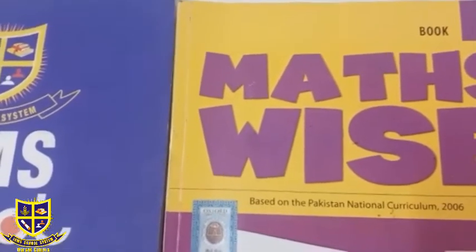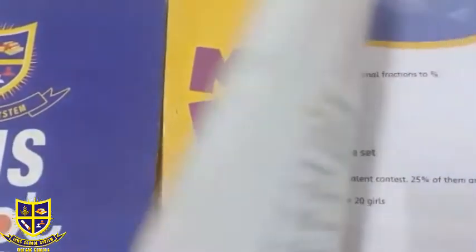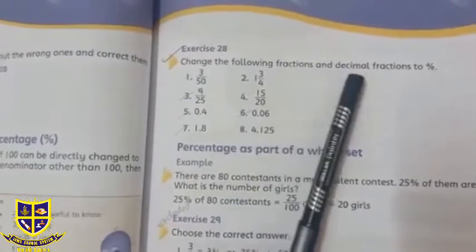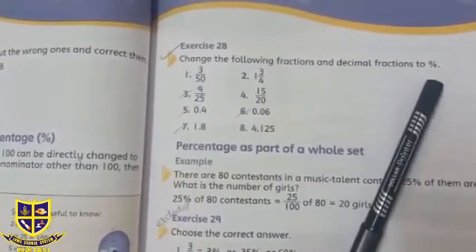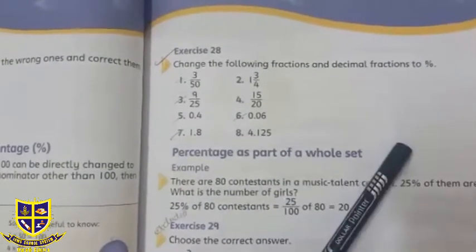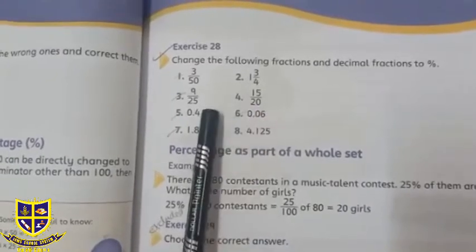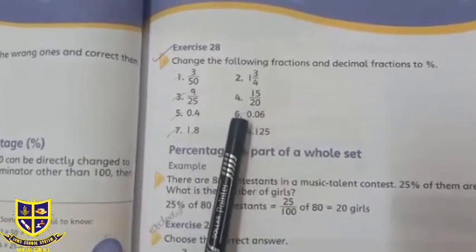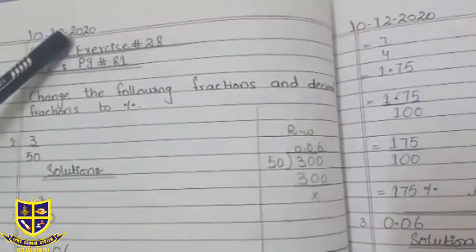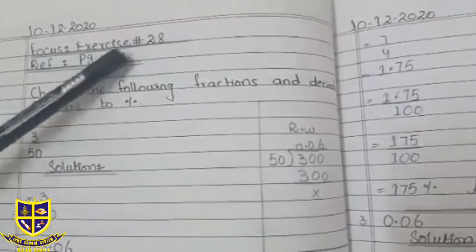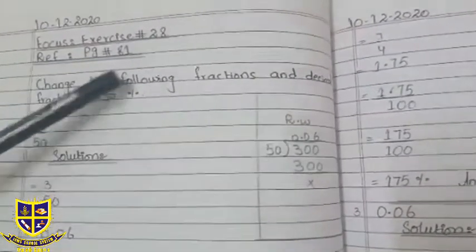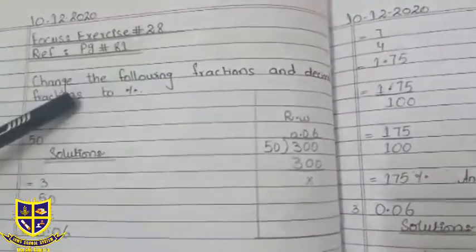So take out page number 81. Exercise 28: change the following fractions and decimal fractions to percentage. In this we have some simple fractions and decimal fractions which we have to convert to percentage. Now take out your copies, we will solve these sums on copy. Write date 10-12-2020, exercise number 28, reference page number 81. Question: change the following fractions and decimal fractions to percentage.